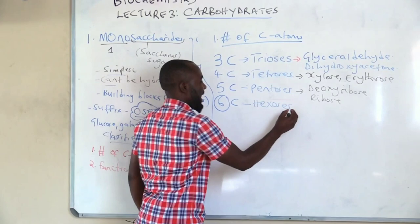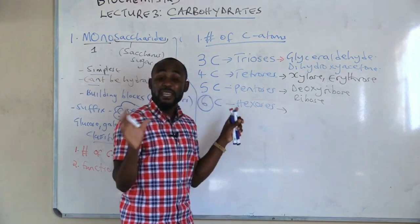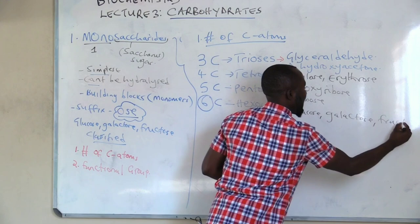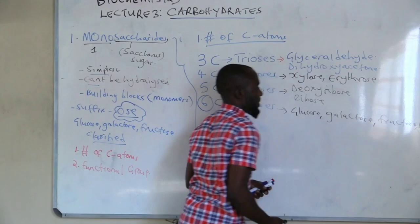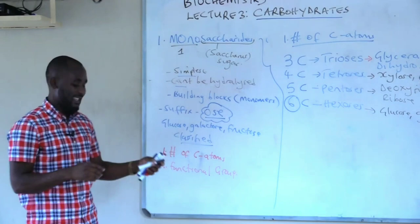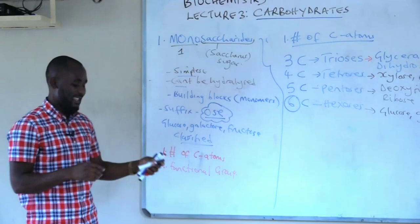So that is how we classify carbohydrates based on the number of carbon atoms. Our second method of classification is based on the functional group that they have. That is classification number two — functional group.